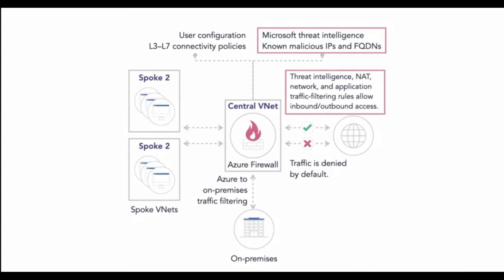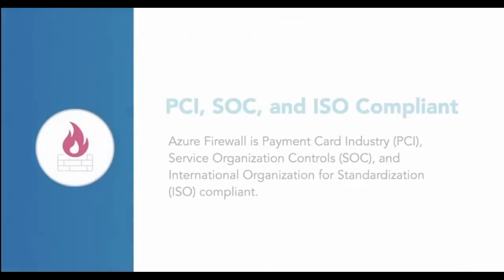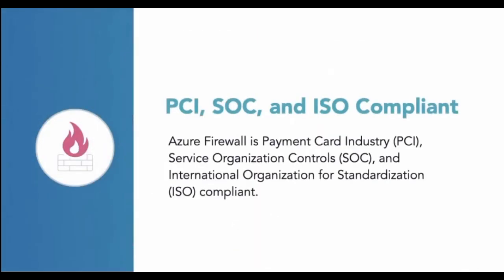Those IP addresses and domains are sourced from Microsoft's threat intelligence feed — that's the Intelligent Security Graph at work. Azure Firewall is also PCI, SOC, and ISO compliant out of the box.